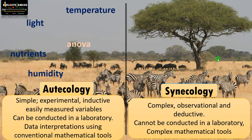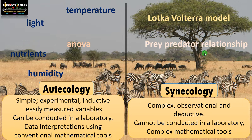Synecology is very complex as it involves many species and their interactions. It is a science of observation rather than experimentation. It is often deductive — we start with a general principle, observe things continuously, and finally make a generalization, which is why it is called deductive. This cannot be conducted in a laboratory setup as it comprises a complex set of species and their interactions. Complex mathematical tools are required, such as the Lotka-Volterra model for prey-predator relationships. Synecology is primarily to understand the structure, organization, distribution, and function of different species in an ecosystem.